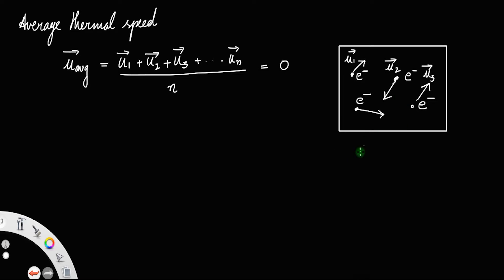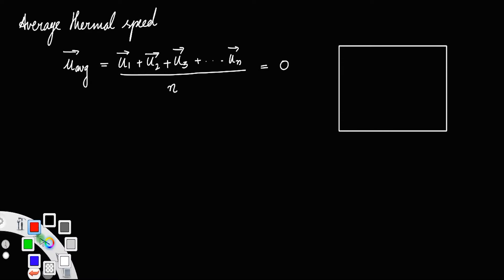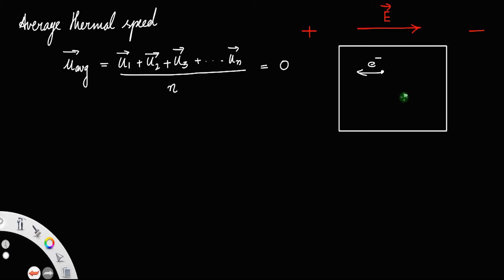Now, if we apply an electric field across the same conductor — with the electric field directed from left to right, so the left side is positive and the right side is negative — all electrons will drift towards the left, that is, in the direction opposite to the electric field, so their velocities will all be in the same direction. Let v1, v2, v3 be the velocities of the respective electrons; every electron drifts towards the left.